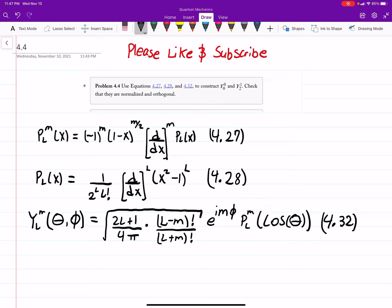So this is problem 4.4 out of Griffith's Quantum Mechanics Edition 3. It says use the three equations I've listed here to construct Y₀₀, Y₂₁, and check that they are normalized and orthogonal.